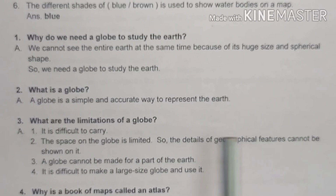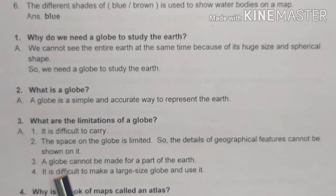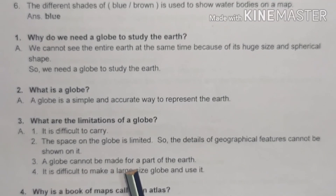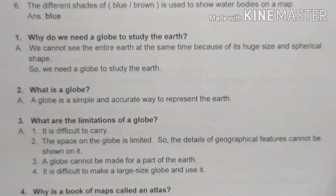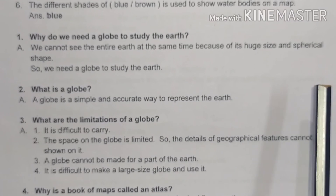All details of geographical features like mountains, rivers, and deserts cannot be shown on a globe. Third, a globe cannot be made for just a part of the earth — it represents the whole earth, not half or a quarter. Fourth, it is difficult to make a large-size globe and use it. These are the four limitations of a globe.